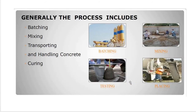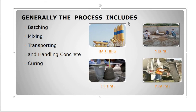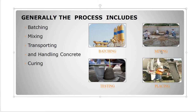The process in an RMC plant includes batching, mixing, transporting, handling, placing, and curing — the same steps as in conventional concrete manufacture. Weight batching is used with accurate equipment and conveyor belts to batch coarse aggregate, fine aggregate, cement, fly ash, and admixtures. The material is then mixed, transported, placed by pumping, and cured.